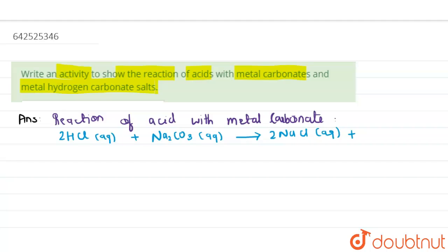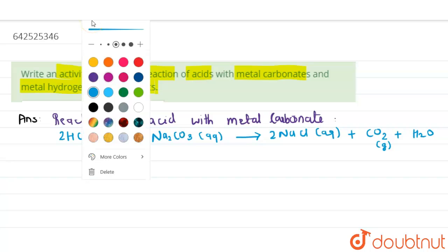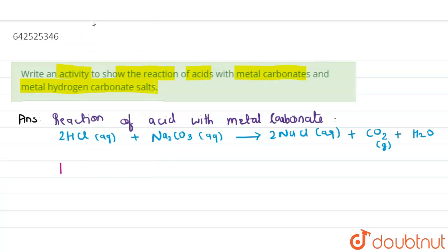Now if we see the reaction of acid with metal bicarbonate, again for the sake of simplicity we are taking acid as HCl.